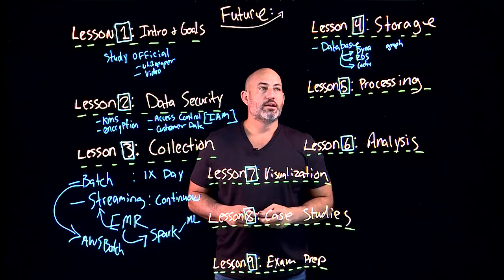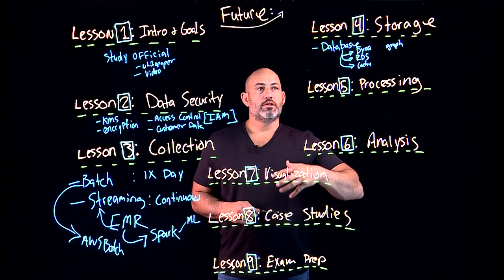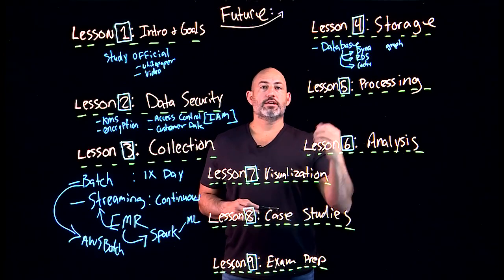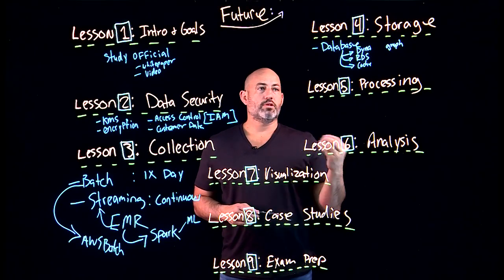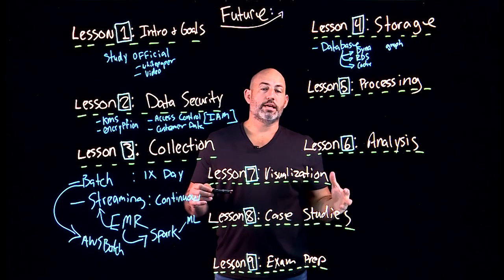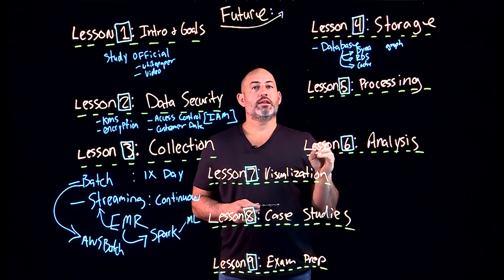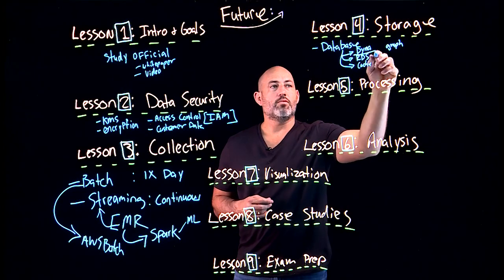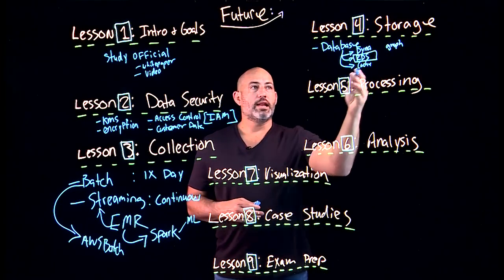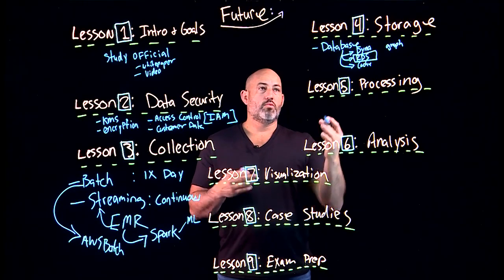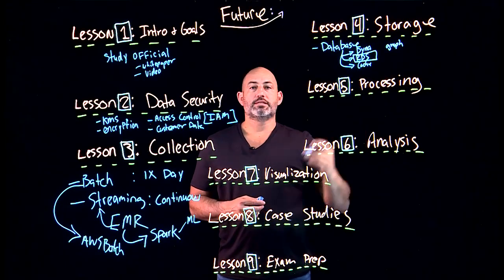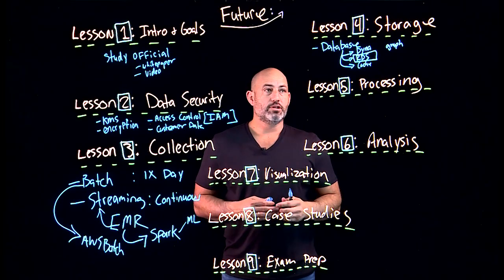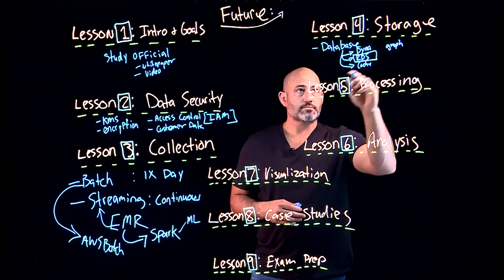RDS is a transactional database — better for things like financial transactions. A cache-based database is ideal when millisecond response times are what matters. A graph database could be suited for social relationships. The question is whether you're using the correct database or shoehorning everything into a traditional relational database. You can absolutely expect exam questions asking you to know the difference between, say, a graph database and DynamoDB.